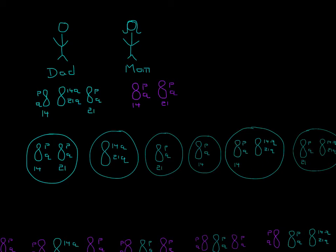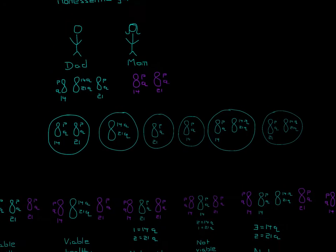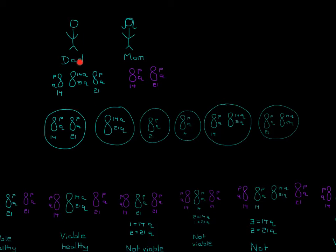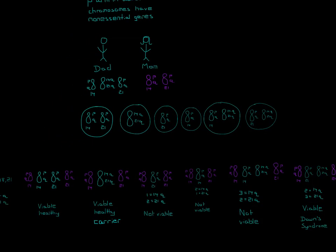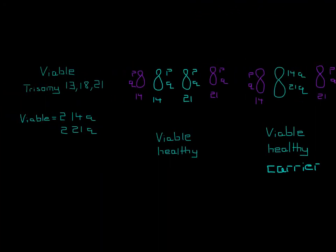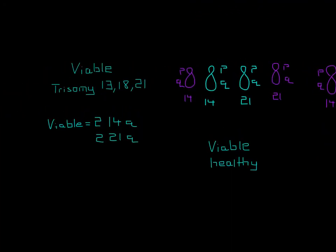That's the complete gamete variation. An easy way to remember it is: a normal one, then one of each, and at the end one normal paired with one Robertsonian translocation — twice, once for 14 and once for 21. Now, combining with the mom's genotype, we can see the offspring phenotype variety. Before going through this, to determine if the child will be viable, we have to look at the three viable trisomies: trisomy 13, 18, and 21. Those are the only ones that are viable — trisomy 14, for example, will not be viable. Viable means having two 14qs and two 21qs.